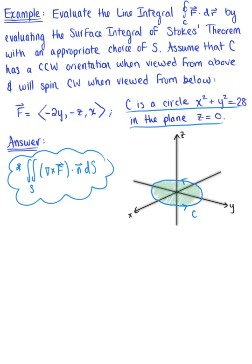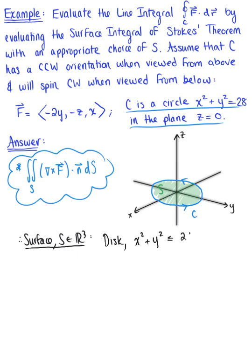Here is our surface. How are we going to define a surface in space that's defined by a circle in the xy plane? We would say that our surface S in R3 is the disk defined as x squared plus y squared is less than or equal to 28. This disk has a radius of the square root of 28.